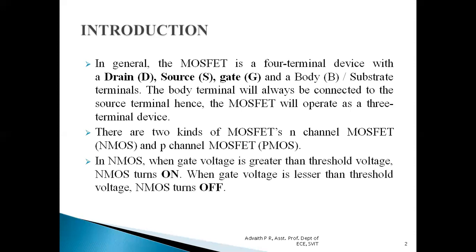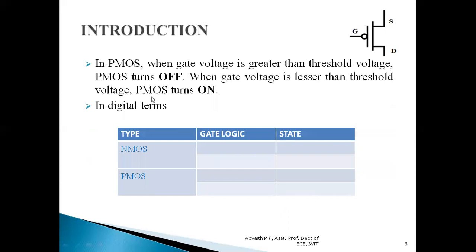In NMOS transistors, when the gate voltage is greater than the threshold voltage, it turns on. When the gate voltage is less than the threshold voltage, the NMOS transistor turns off. In digital level abstraction, when the gate input is logic level high, the NMOS transistor turns on; when the gate input is logic level zero, the NMOS transistor turns off. When gate is high, there is a connection established between source and drain; when gate is zero, it acts as an open switch.